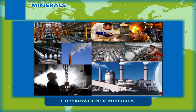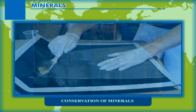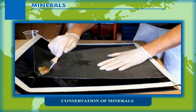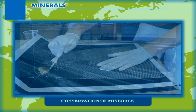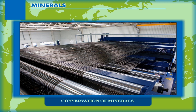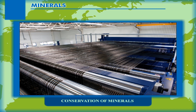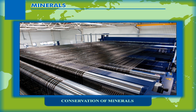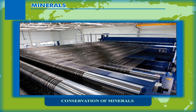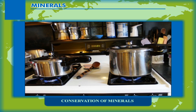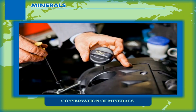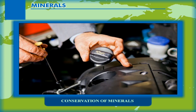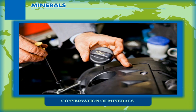We should find alternative methods to reduce the use of minerals. Good examples are the use of carbon fibers in place of aluminum and other expensive metals in automobile bodies and in the construction of aircraft. We should also avoid unnecessary use of mineral products. To conserve mineral oil and natural gas, we should keep our vehicles maintained so that they remain fuel efficient and avoid unwanted use of our vehicles.